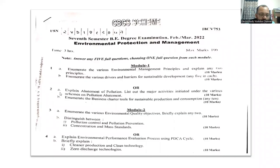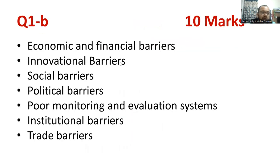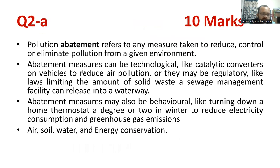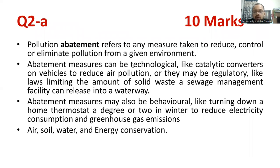Question 2a: explain abatement of pollution and list out the major activities initiated under the various schemes on pollution abatement. First of all you need to explain what pollution abatement is. Pollution abatement refers to any measure taken to reduce, control, or eliminate pollution from the given environment. What are the different measures? Try to explain with your own examples.